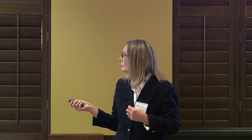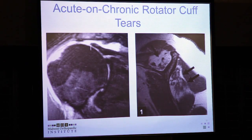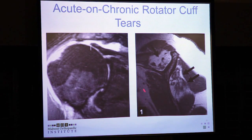We see acute tears with good muscle, then chronic changes, and finally those very difficult acute-on-chronic patients — perhaps from lifting something heavy or a fall at work. They may have an acute tear superimposed on an older injury that isn't repairable, making management very complex. For example, a patient may have chronic supraspinatus and infraspinatus injuries but an acute subscapularis tear — a very difficult circumstance to treat.